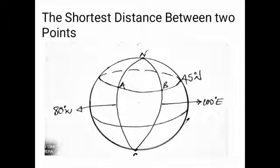Let's look at the diagram here. We have point A and point B, and they are both lying on the same latitude which is 45 degrees north. Point A is lying on longitude 80 degrees west and point B is lying on 100 degrees east. Now suppose we were asked to find the shortest possible distance between point A and point B.